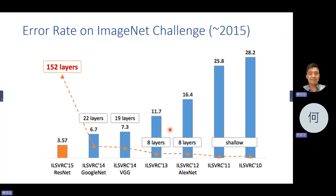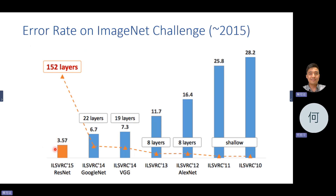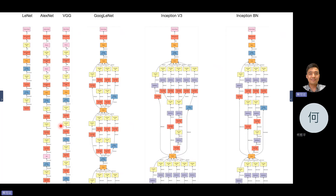At that time, researchers found that the push was to create more layers — more layers makes better results. They tried to push the limit. Until 2015, researchers from Microsoft Asia — Kaiming He — pushed the limit to 152 layers.